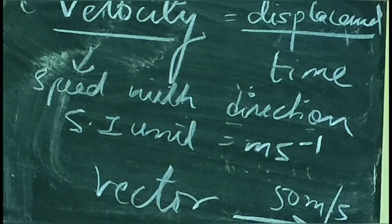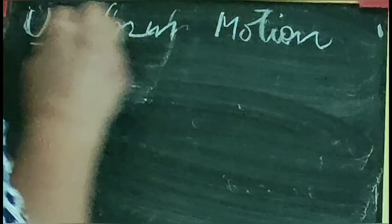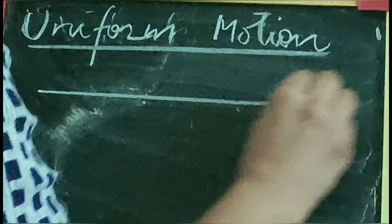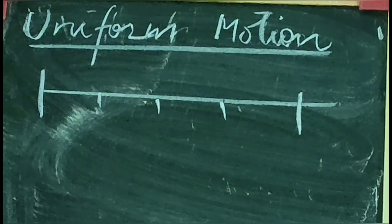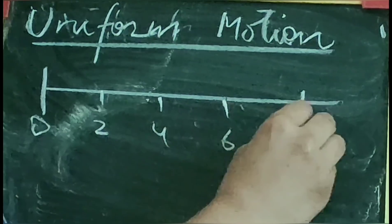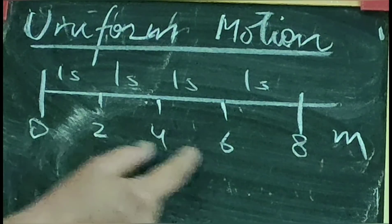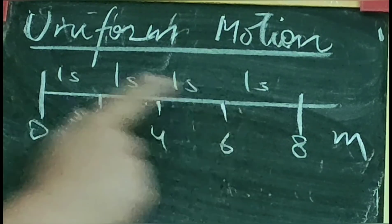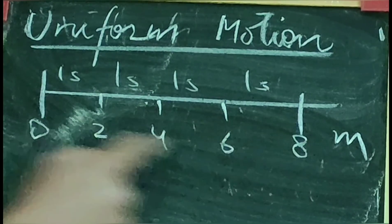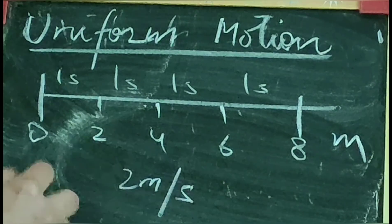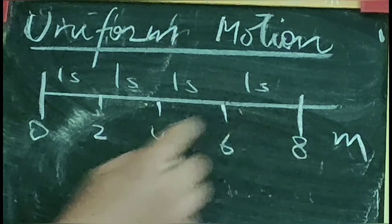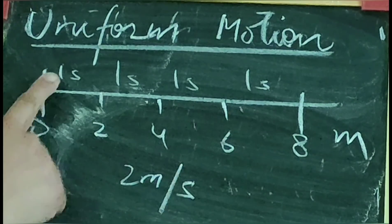Now, once we have defined speed and velocity, we will define uniform and non-uniform motion. An object is said to be in uniform motion if it covers equal distances in equal intervals of time. Suppose an object covers 2 meters every 1 second — it is covering equal distances in equal intervals of time. We say the object is in uniform motion. That means the speed is fixed at 2 meters per second.